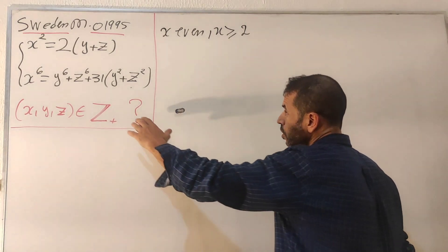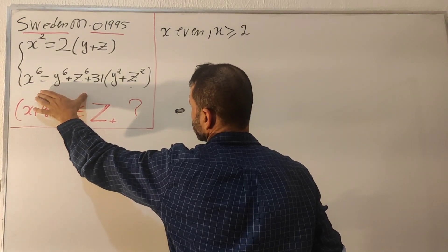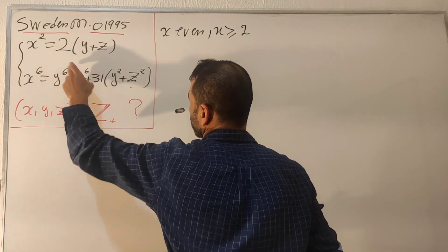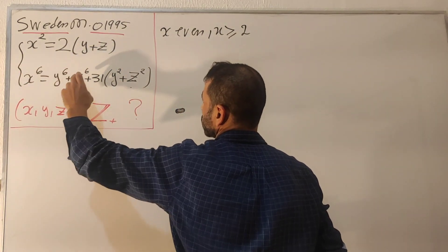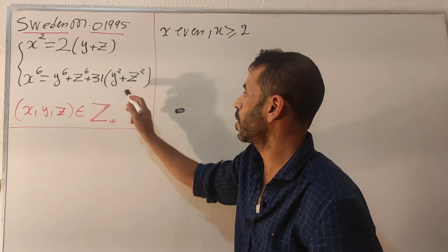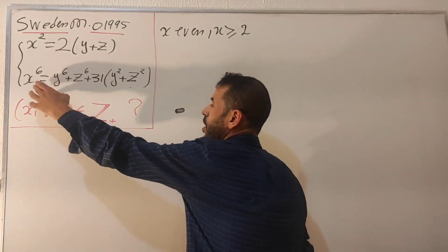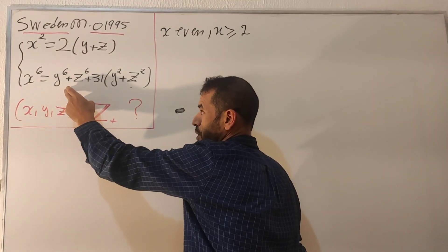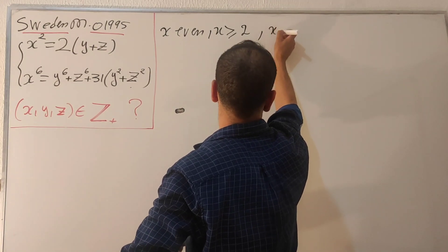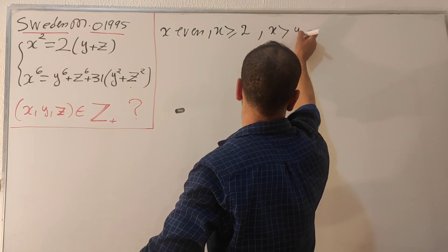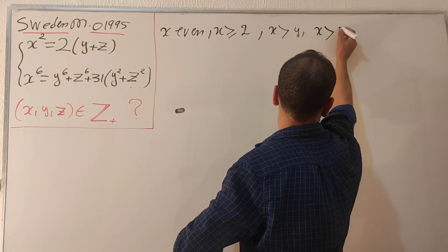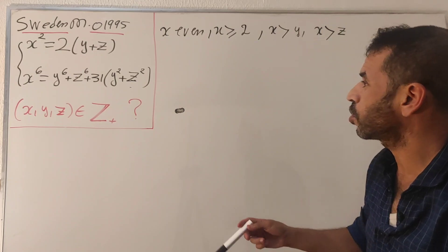The second observation: look at the second equation. Since x to the 6 equals three parts — y to the 6, z to the 6, and the remaining term — x must be bigger than y as well as z. So x is strictly greater than y and x is strictly greater than z.